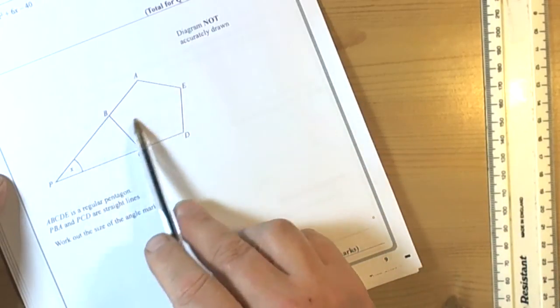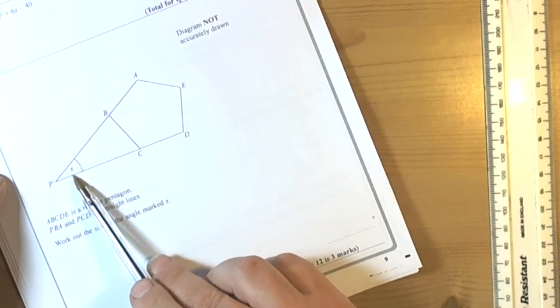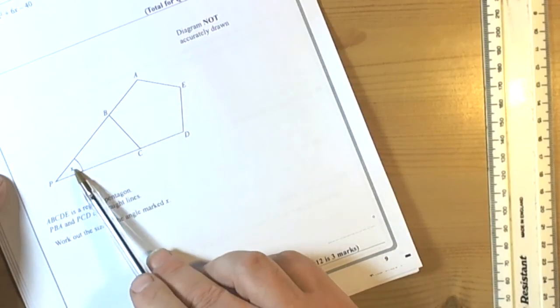Okay, so we've got a question here that's got various shapes within it, a pentagon, a triangle, and x, which suggests that if we read the question they're going to ask us to find the value of x.